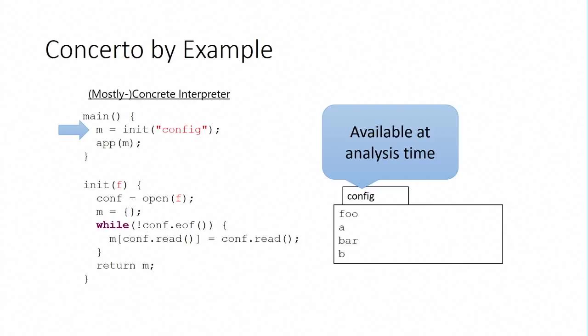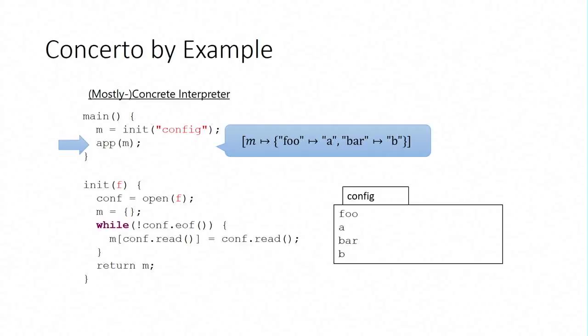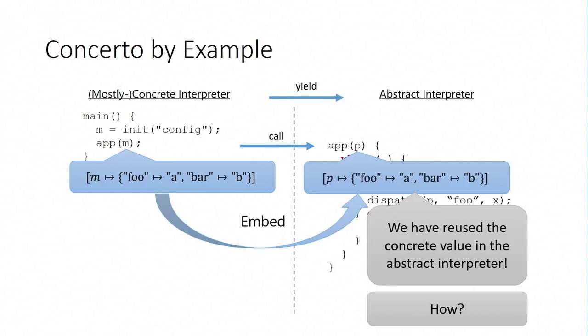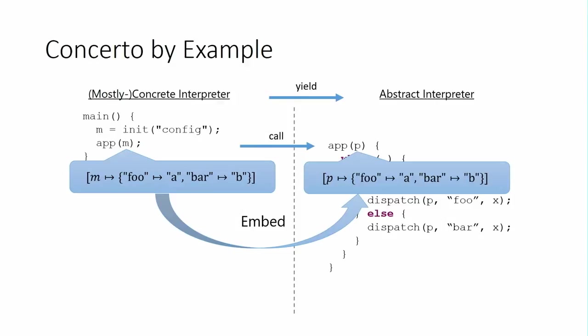So it's available at analysis time. We're just going to run it. It's going to end up building a map that says the foo service maps to A, and the bar service maps to B. And now we're going to call the application. The application is going to have some loops and some stuff, and it's eventually going to call some dispatch procedure back in the framework. We have to pass in some value for P. We are just going to pass in the concrete value, which is really weird because we're supposed to be doing abstract interpretation. But the abstract interpretation, the application is not going to mess with this map. This map is the framework's problem. It would be behind an abstraction barrier. So we can just reuse it concretely.